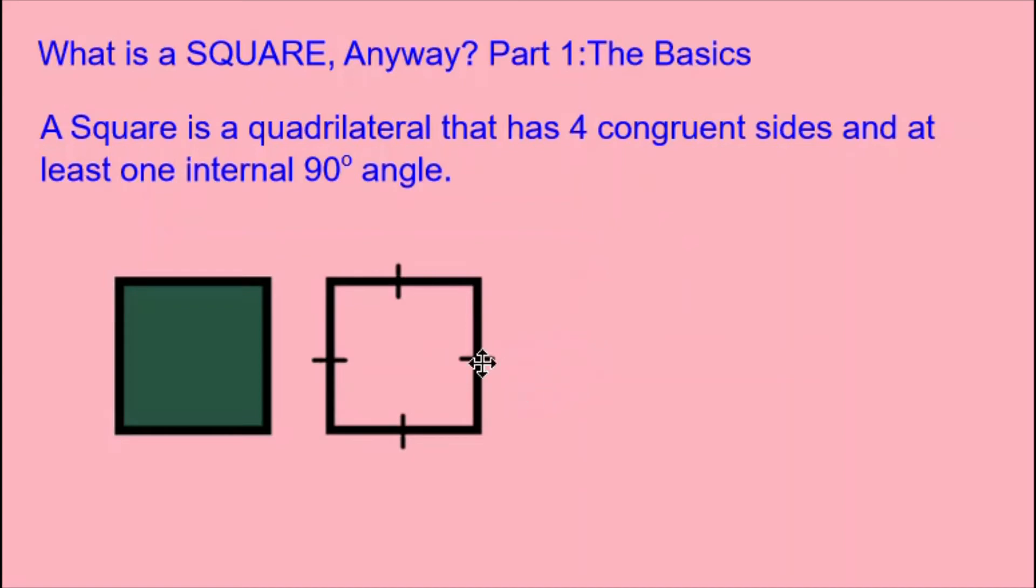In this little diagram of a square, we can use these little lines to signify that the four sides have the same measurement, the same length.